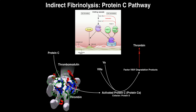In some ways you could call this an indirect fibrinolysis because it's leading to net degradation of fibrin, but not directly — it's not actually degrading fibrin. What it's doing is it's preventing the formation of fibrin, at least more fibrin. And it's done through a protein called protein C.